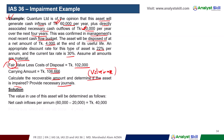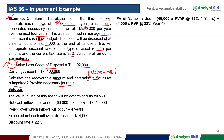The solution shows that the value in use is calculated using the present value factor formula: 1 minus (1.22 to the power of negative 4) divided by 0.22, applied to the net annual cash flows.